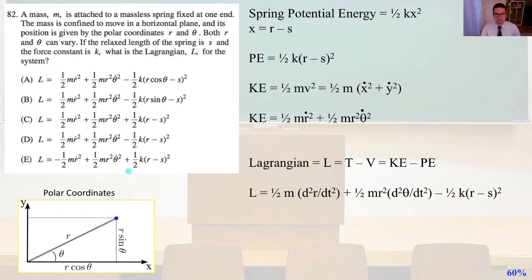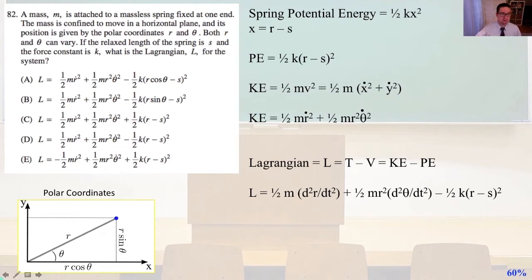The spring potential energy equals 1/2 kx squared, where in this problem x equals r minus s. So our potential energy equals 1/2 k times the quantity (r minus s) squared. Our kinetic energy equals 1/2 mv squared equals 1/2 m times (x-dot squared plus y-dot squared), which are time derivatives in polar coordinates. Be sure to know your polar coordinates.